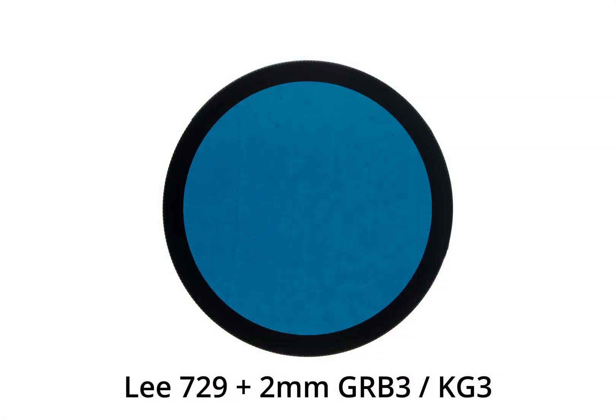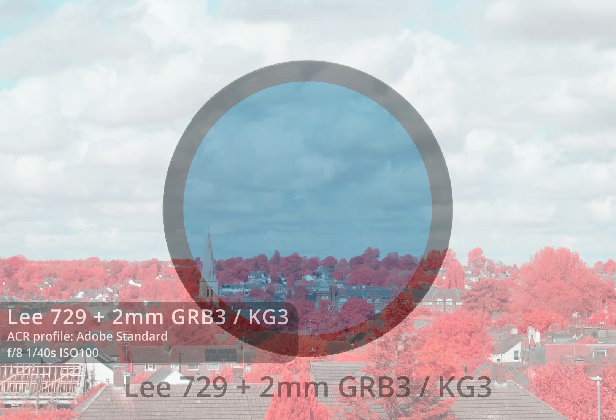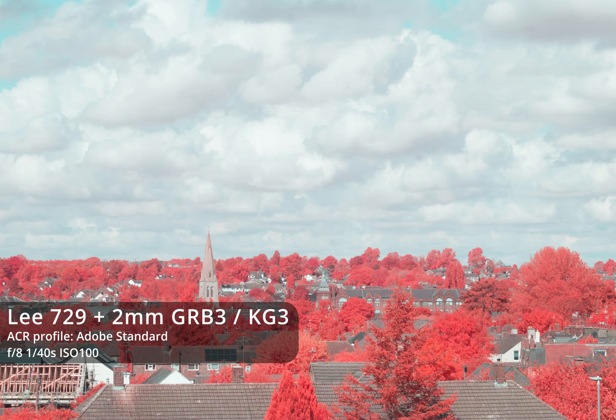The next stack combines 2mm GRB3/KG3 with a Li729 scuba blue gel, giving results similar to Kolari's IR Chrome filter — foliage turns red and the sky is blue or slightly teal. I heard about this stack through the ultraviolet photography forums. The resulting images differ from Aerochrome in that with IR Chrome reds stay red, while with Aerochrome-style images reds shift to yellow, though there's also the argument that Aerochrome should actually have magenta foliage rather than red.